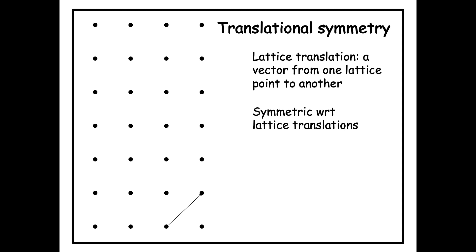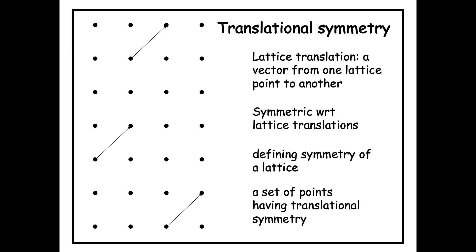A lattice is symmetric with respect to all lattice translations. What we mean by that is if we translate all lattice points by identical translations, we bring the lattice into self-coincidence, because every lattice point which moves actually coincides with another lattice point. So the whole lattice comes into self-coincidence. That is the defining symmetry of the lattice. We can say a lattice is a set of points having translational symmetry.